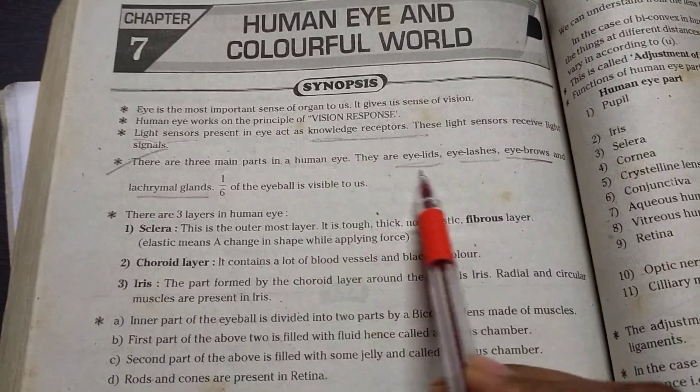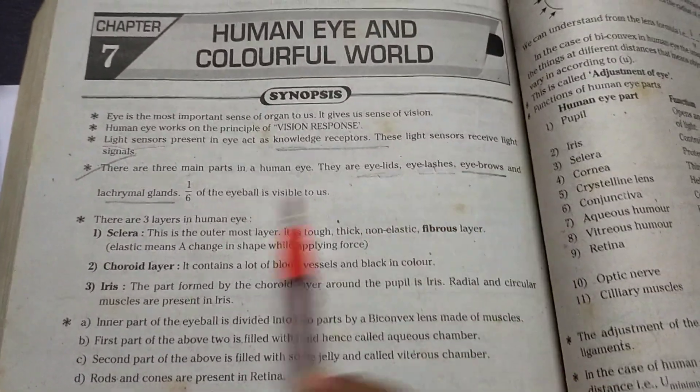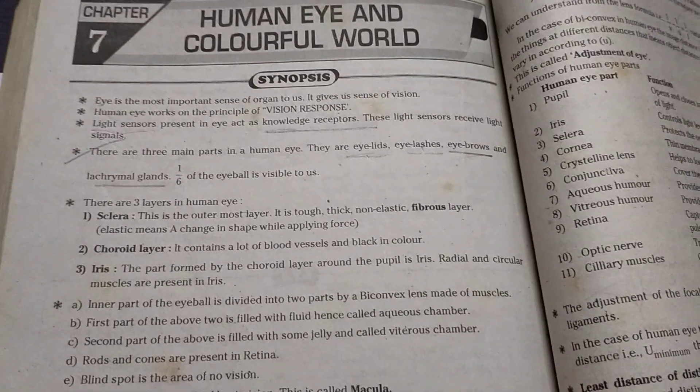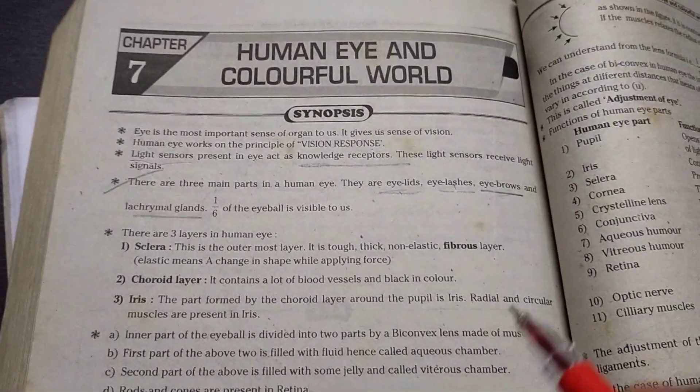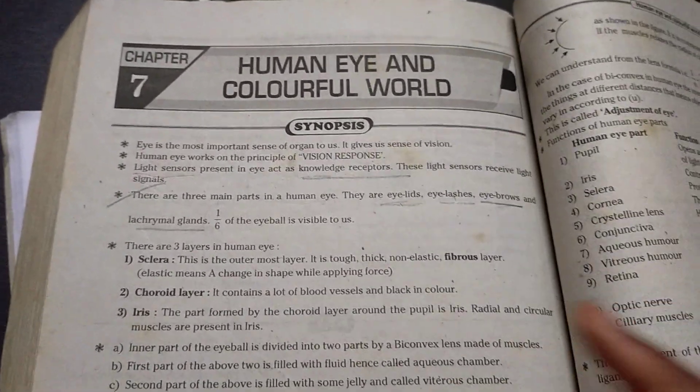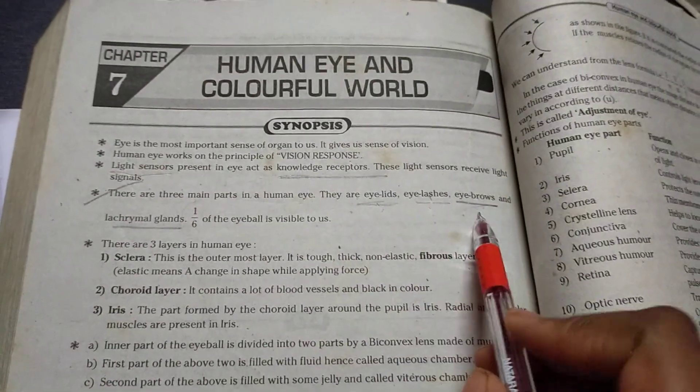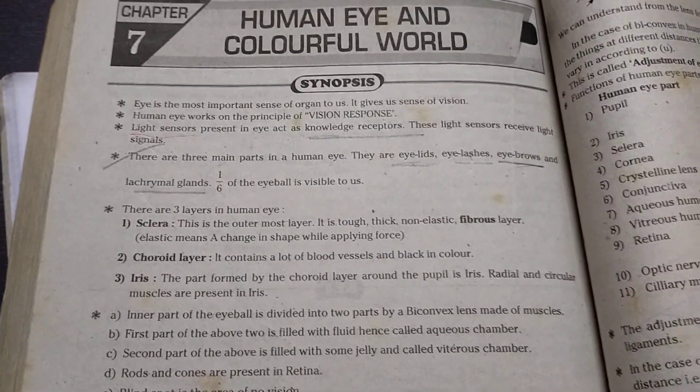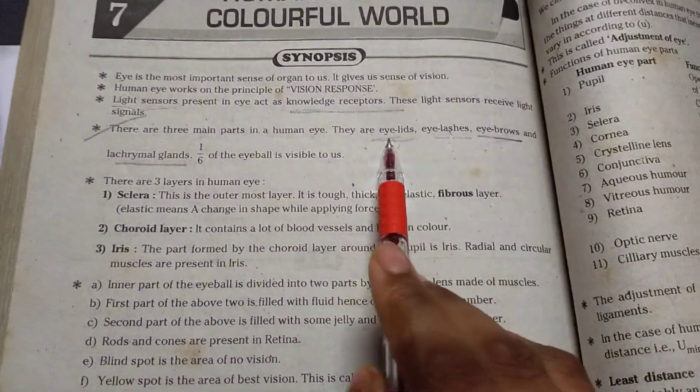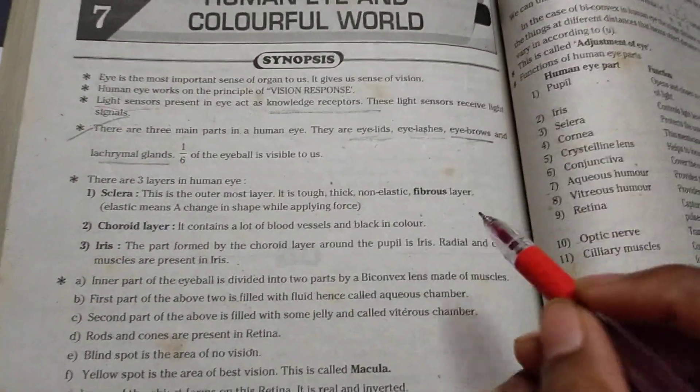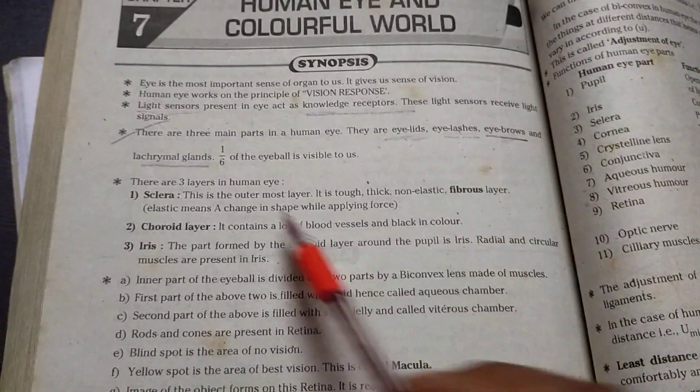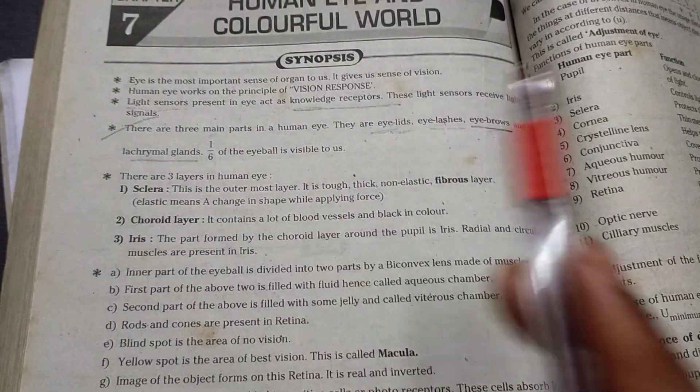And there are three main parts in human eye. There are the eyelids, eyelashes, eyebrows and lacrimal glands. One by six of the eyeball is visible to us. You think that all they just to makeup things right. But they are very valuable things of the eye which can protect the eye. And one by six of the eyeball is visible to us.